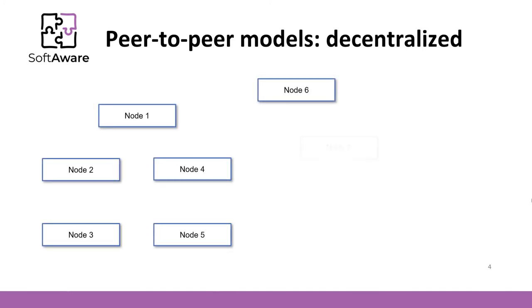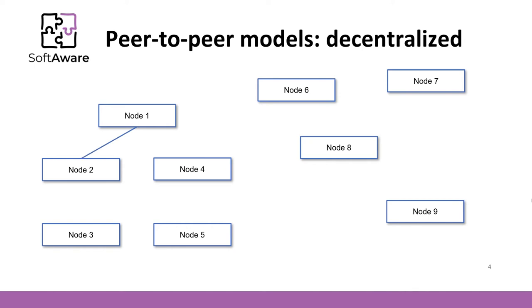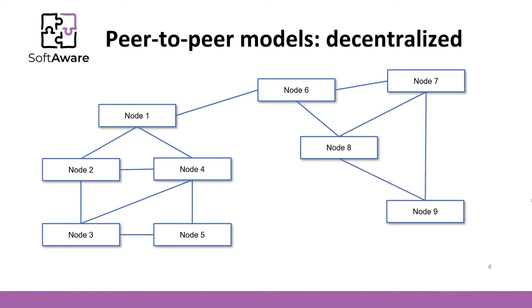In the decentralized model, peers are equally privileged, equipotent participants in the application. They form a peer-to-peer network of nodes. In an unstructured peer-to-peer network, the nodes are connected randomly. Because there is no structure globally imposed upon them, unstructured networks are easy to build and allow for localized optimization to different regions of overlay.